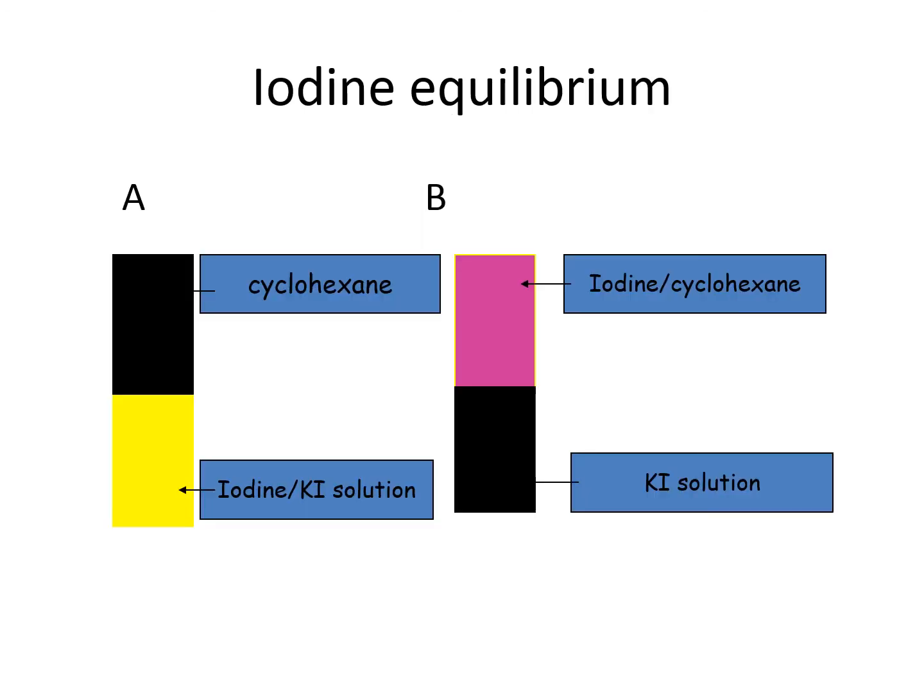So here is one boiling tube containing potassium iodide solution with iodine in it and cyclohexane in the top layer. And a second boiling tube containing potassium iodide solution with an iodine cyclohexane layer. We're going to see what happens.